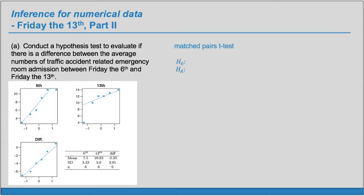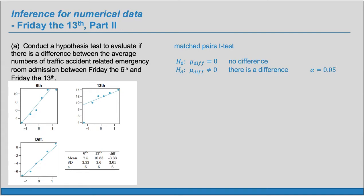First, we need our hypotheses. Our null hypothesis always says nothing's going on, there's no difference. So it'll be that mu sub diff equals zero, no difference. Our alternate hypothesis, because we want to evaluate if there is a difference, we'll do a two-sided test and our alternate hypothesis will be that mu sub diff does not equal zero. That is, the true difference, the true average difference in the number of traffic accidents between these two dates. Now we'll set our significance level alpha at 0.05.